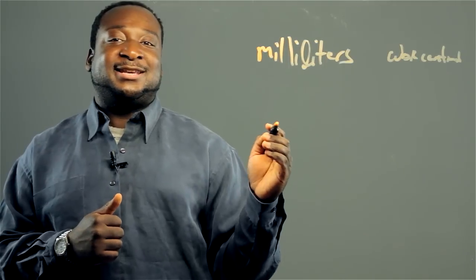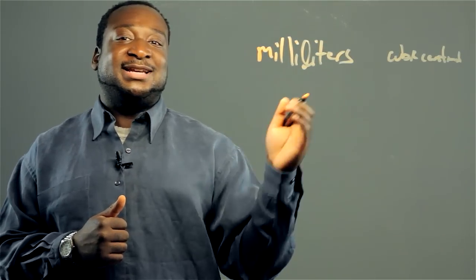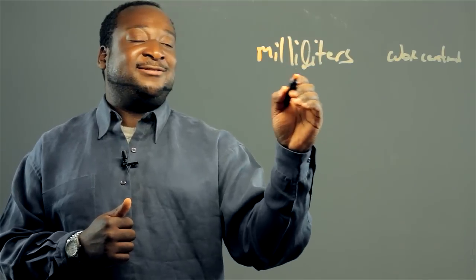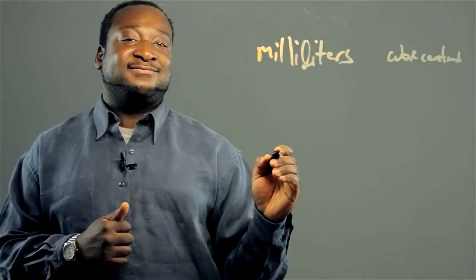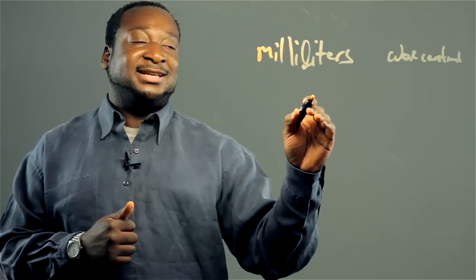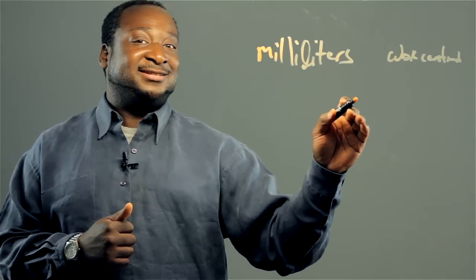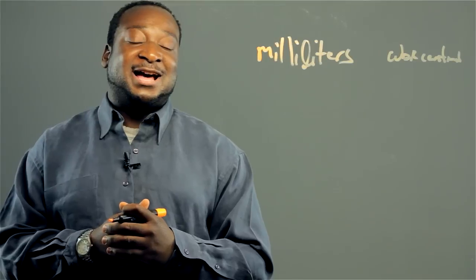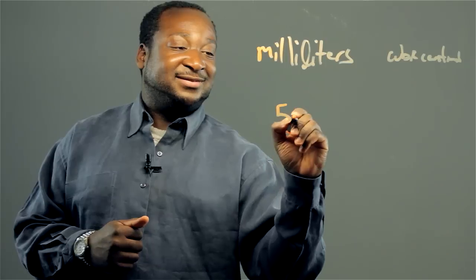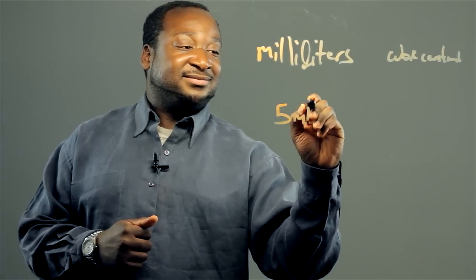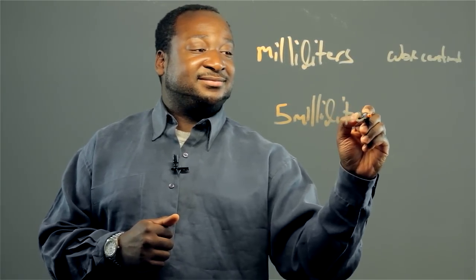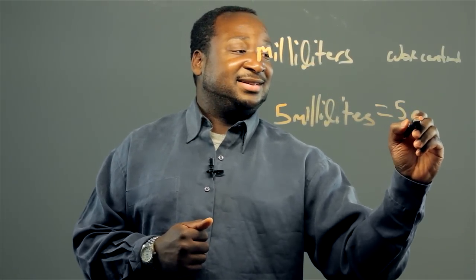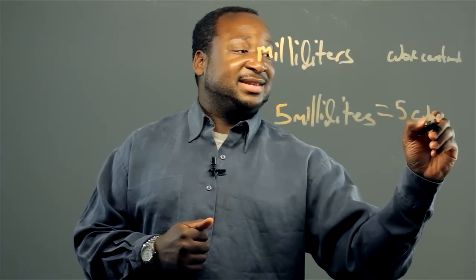In this case, we don't have to do any computations because they're equal. 'Milli' equals one one-thousandth, and one liter is equivalent to one one-thousandth meters cubed. So therefore, we don't have to do any computations. So five milliliters is equivalent to five cubic centimeters.